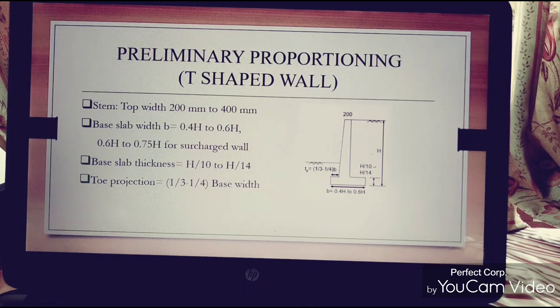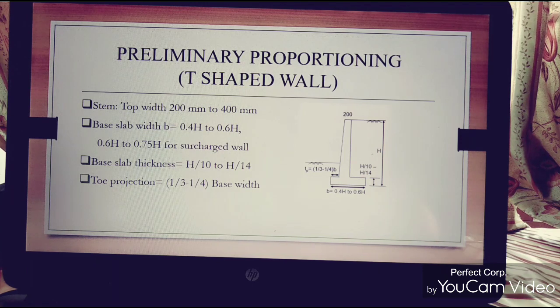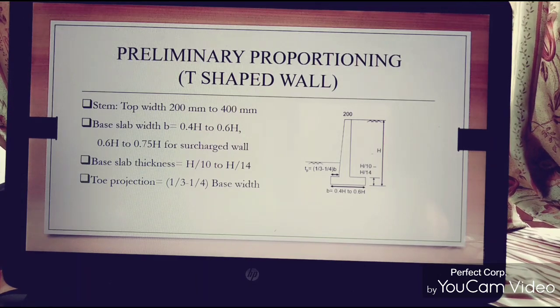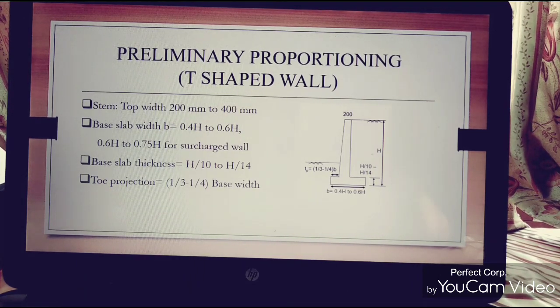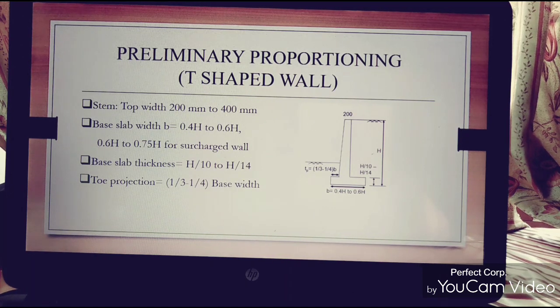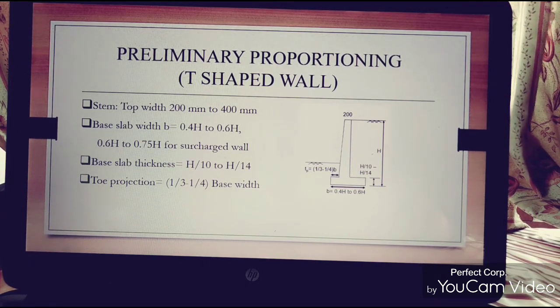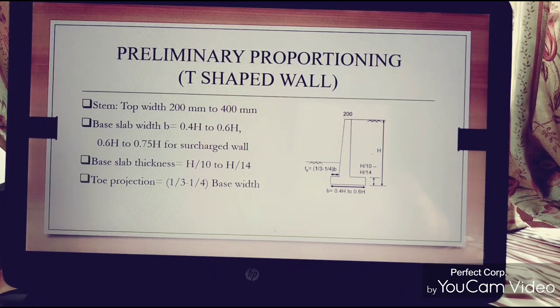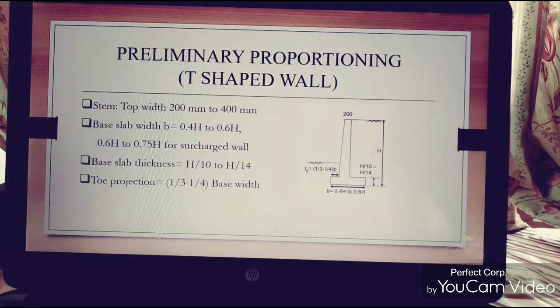Preliminary proportioning for T-shaped wall. This is the preliminary criteria, the dimensional criteria. The top width is 200mm to 400mm. We will consider that range. This is the base slab width.